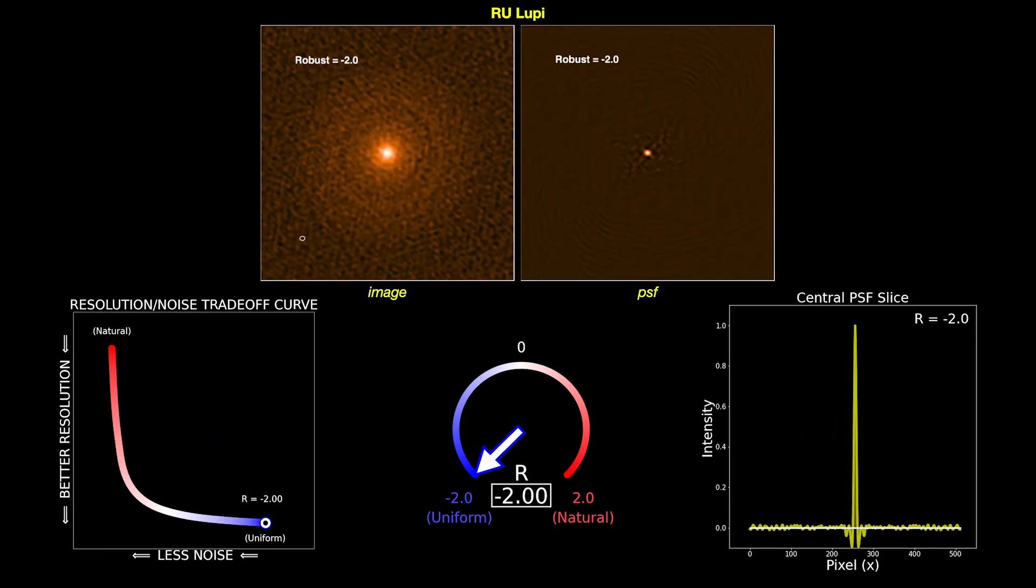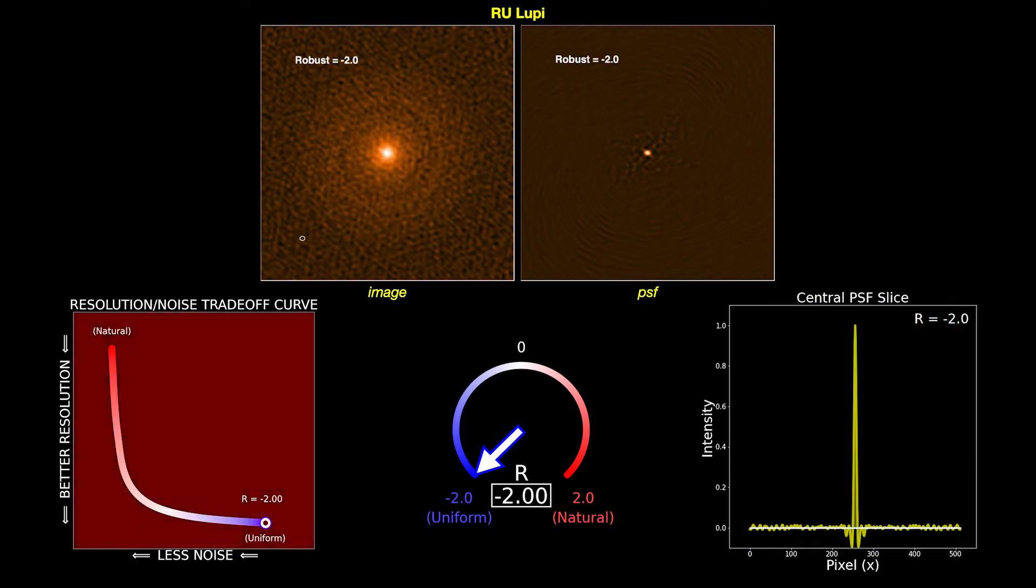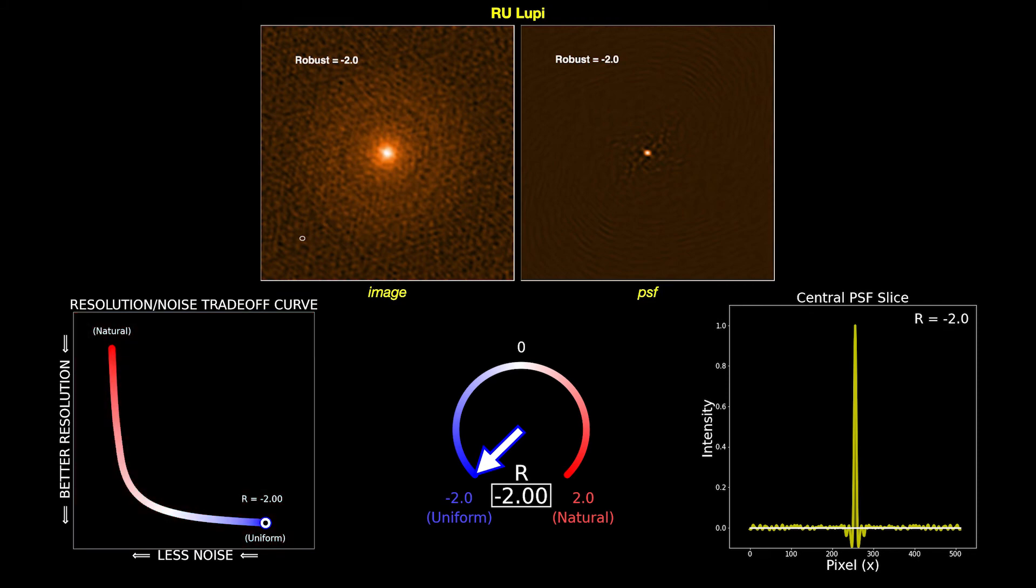Let's go back to our RU Lupi image. We've added several panels. Here is a horizontal slice through the center of the point spread function. On the left is a graphical representation of the tradeoff between resolution and noise for a given value of R. As we can see, at R equals minus two, we have the best possible angular resolution, but the image is very noisy.